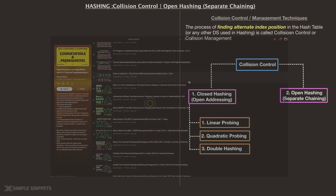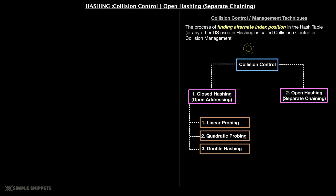There are generally two methodologies to handle collision. One is closed hashing, also called open addressing, which has three basic variants: linear probing, quadratic probing, and double hashing. The second method is open hashing, also called separate chaining. In this video, we're going to focus on open hashing, also called separate chaining.